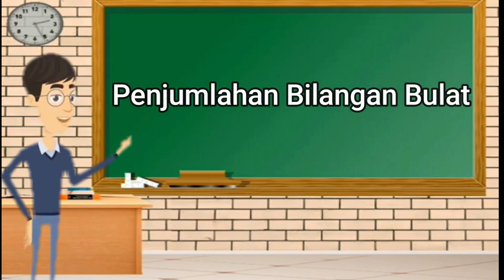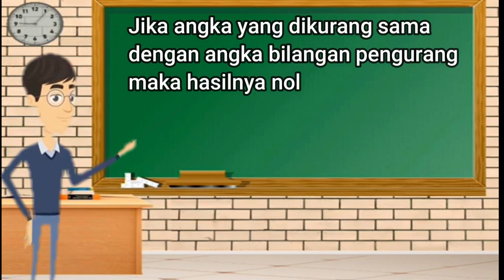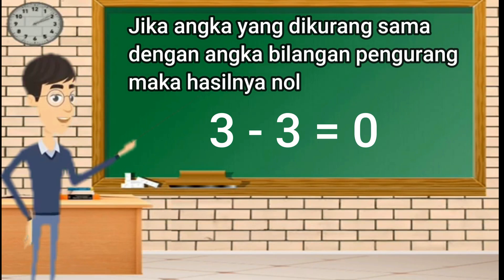Bagaimana, mudah bukan cara penjumlahan operasi bilangan bulat? Kita lanjutkan dengan pengurangan bilangan bulat. Jika angka yang dikurang sama dengan angka bilangan pengurang, maka hasilnya adalah 0. Contoh: 3 dikurang 3 sama dengan 0.